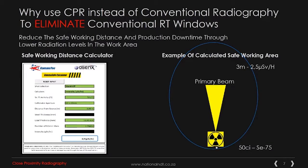Continuing the case for CPR over conventional radiography, in the sense of the elimination of conventional RT windows, it helps reduce the safe working distance and production downtime through lower radiation levels in the work area. This is achieved with the utilization of the proprietary Gammatec radiation safety calculator, which allows us to determine how many protection sheets are required to bring a safe area down to the desired size — anywhere from a cross section of three meters to six meters, dependent on source activity in curies.